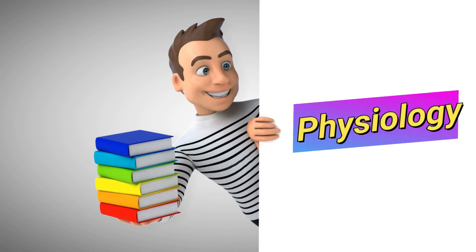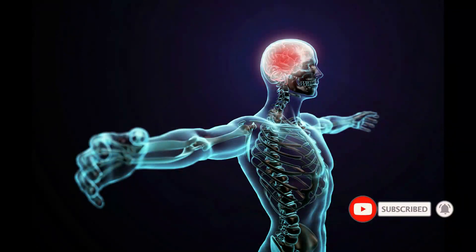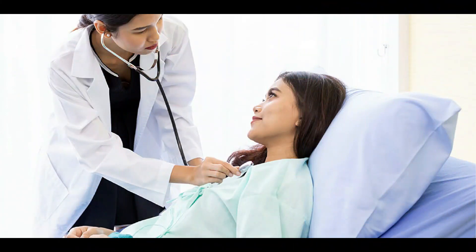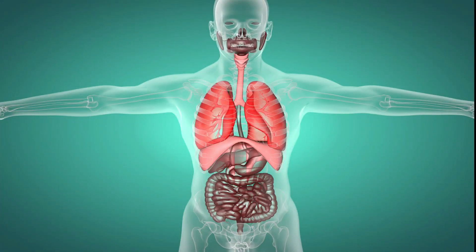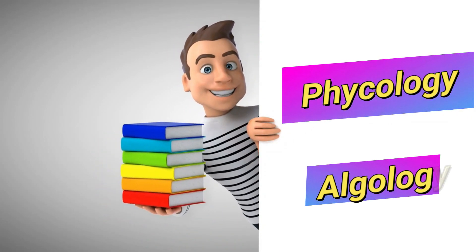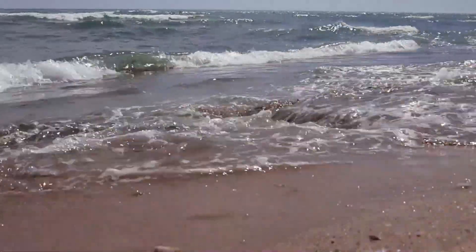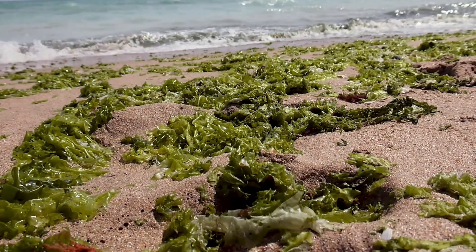The next branch is physiology, which deals with the functions of living organisms and their parts — the study of the mechanisms in a living system. All processes occurring in living organisms are dealt with in physiology, such as respiration, digestion, photosynthesis, and other processes. The next branch is phycology, also called algology. It is a branch of botany concerned with the study of algae and seaweeds — their structure, function, and uses.